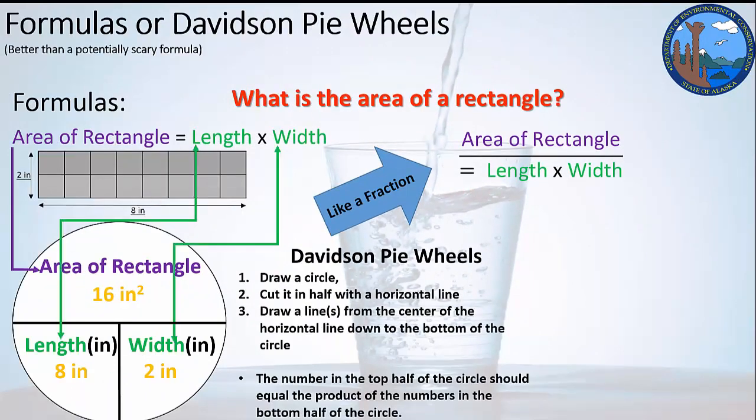So that would be divided by length times width with the Davidson pie wheel too. Our area of a rectangle is on one side of the equal sign, we put it in the top. The other side of the equal sign, the length times the width or whatever variables are over here, go in the bottom slices of the pie. And that helps folks remember how to make it work.